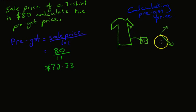So in our example here, if someone went and bought this shirt, the shopkeeper would get $72.73. Now, from here, it's a pretty straightforward process.